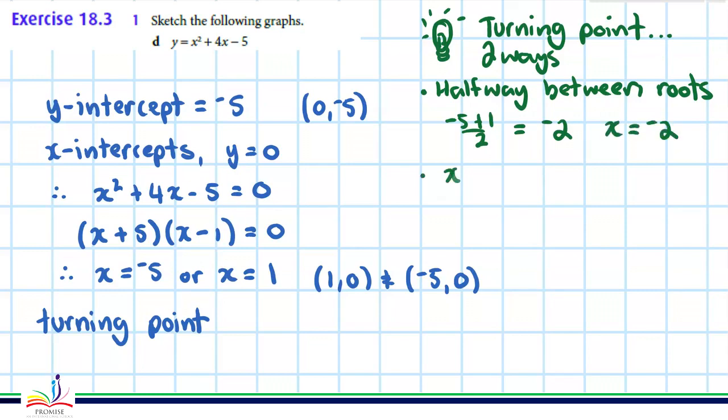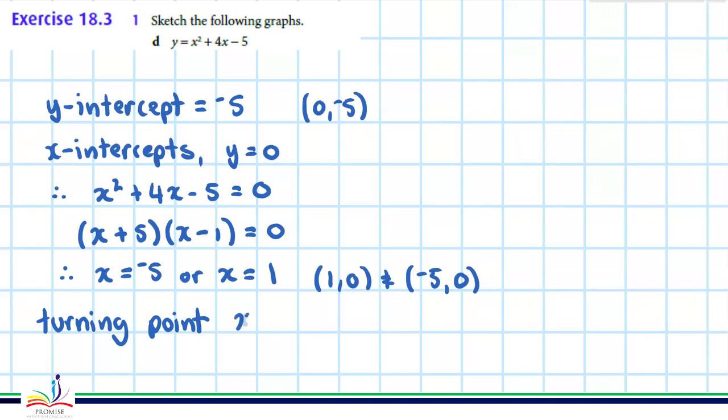Or you can use the formula that the turning point x-value is x equals negative b over 2a. The b value is 4, so we would make it negative 4, and over 2a—a is just 1—so it's 2 times 1, so you get negative 4 over 2 again, which is x equals negative 2.